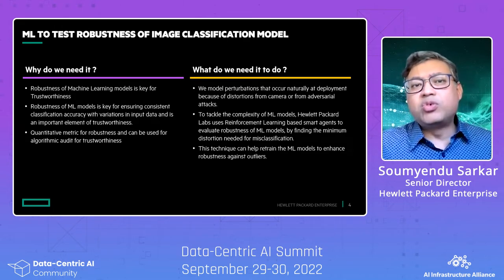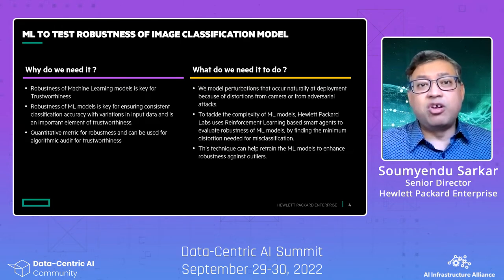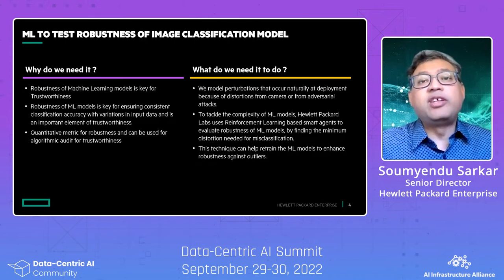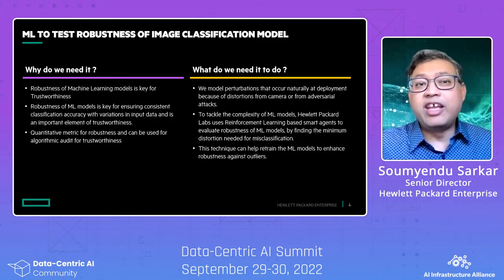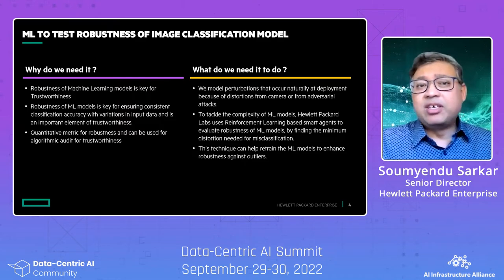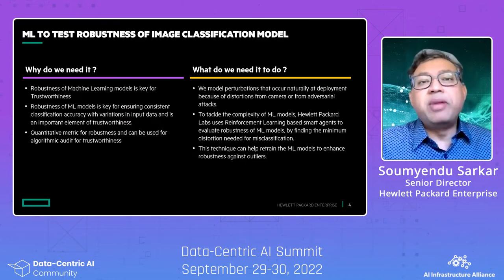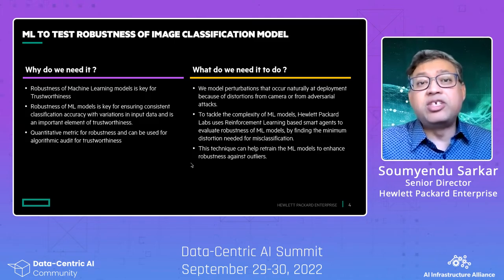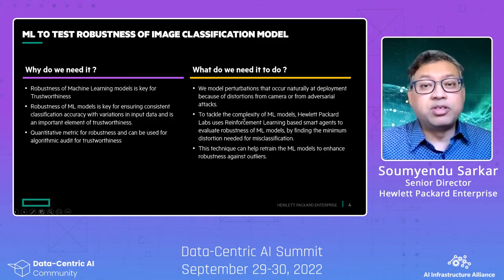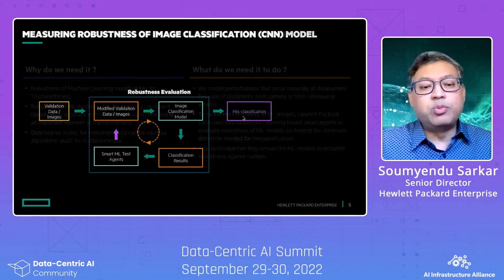This will also lower the risk for users in deploying underperforming machine learning models, to increase return on investment, decrease liability, and help in regulatory compliance. This provides a quantitative metric for robustness and can also be used for algorithmic audit for trustworthiness. In addition, this technique can help retrain machine learning models to enhance robustness against outliers, as we'll soon see.